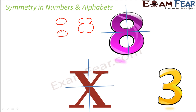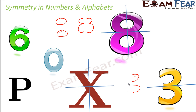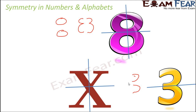How about 3? In case of 3, it has a horizontal line of symmetry because the two parts are identical. But it does not have a vertical line of symmetry — if you try to draw a vertical line, one part would look different from the other, so they are not identical. Therefore, 3 has only a horizontal line of symmetry.